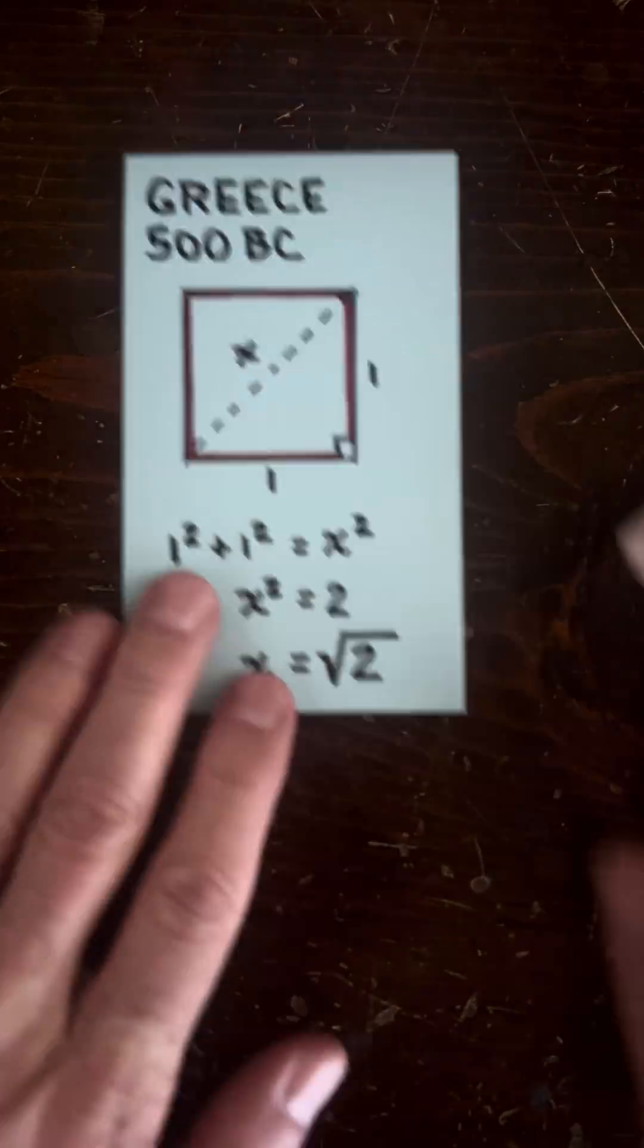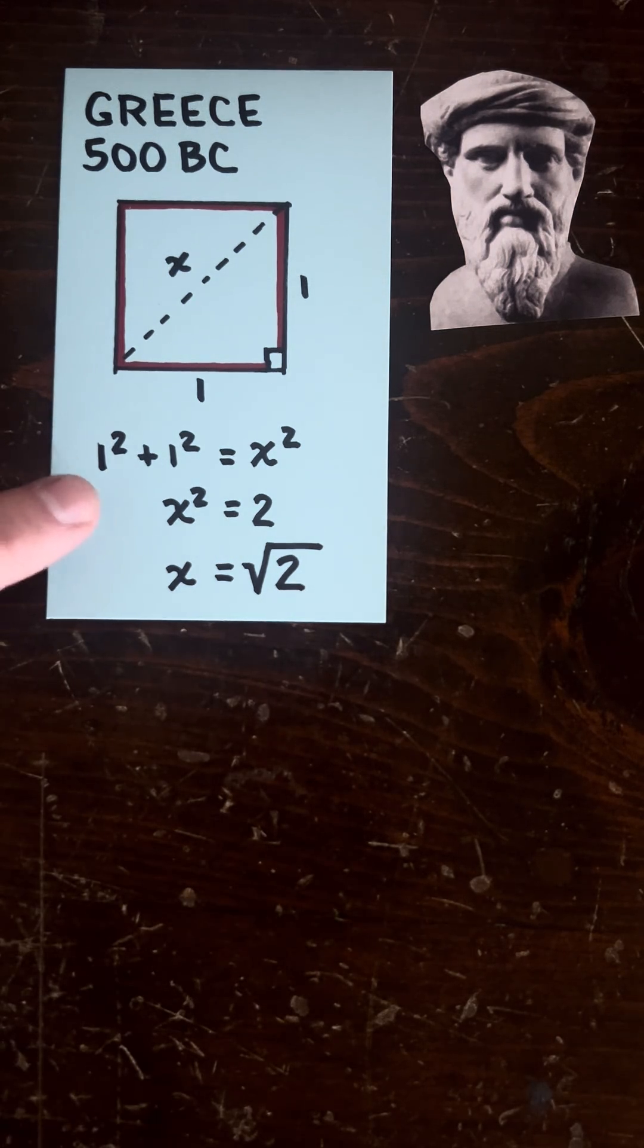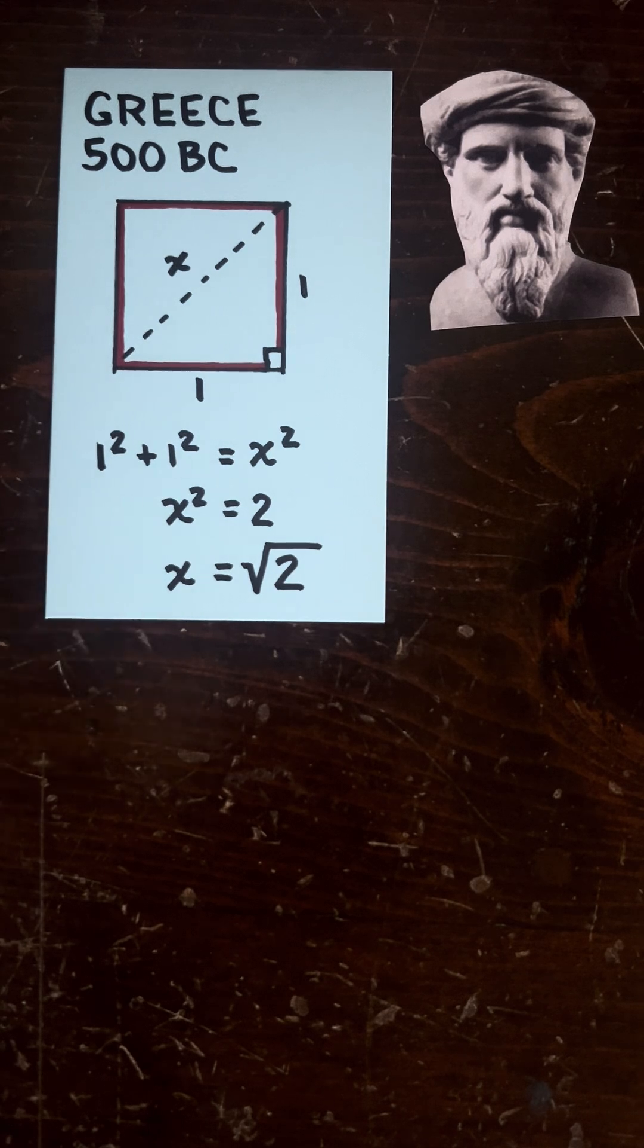But the Greeks came along and said, look, this is a useless task we're trying to solve here because they knew the Pythagorean theorem, which says 1² + 1² = X², X² = 2. So X is the square root of two.